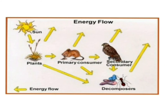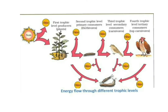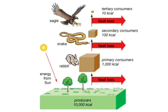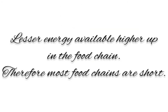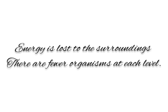Plants derive energy from sunlight. Producers pass on this energy from one organism to another sequentially. At each transfer in the food chain, about 90% of energy is dissipated as heat, and only 10% of the energy is transferred to the next level. Since very little energy is transferred, lesser energy is available to animals at higher levels, which is why most food chains are short. As we go from one level to the next, there are fewer organisms because energy is lost to the surroundings.